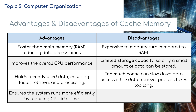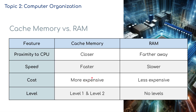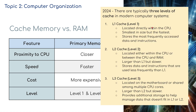Cache ensures the system runs more efficiently by reducing CPU idle time. Comparing cache memory versus RAM: cache is closer to the CPU, faster than RAM, more expensive than RAM, and comes in different levels — level 1 and level 2. RAM does not have levels, though it does come in different types.